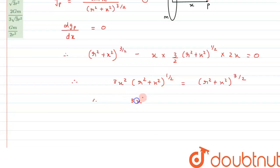So from here we can say, therefore, we are left with 3X² equals R² + X². Therefore, from here the value comes out to be 2X² equals R².